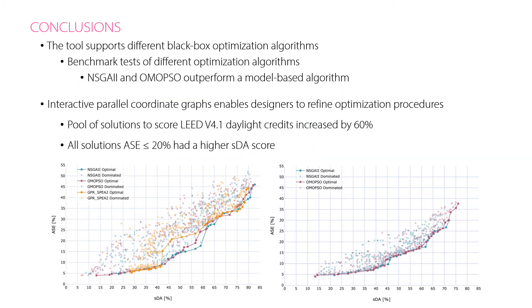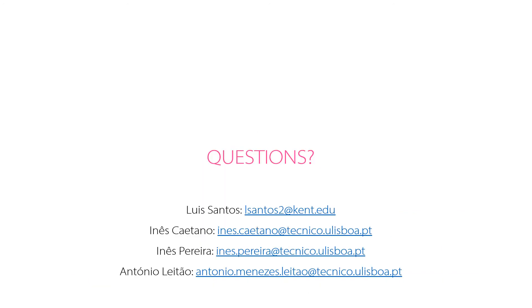In conclusion, our tool supports different optimization algorithms allowing architects to perform benchmark tests in order to find the most suitable search procedure to solve a given problem. In our experiment, the genetic algorithm NSGA2 and the particle swarm optimizer HOMOPSUM outperformed a model-based algorithm, thus challenging some recent published findings in building performance optimization. The interactive parallel coordinate visualization is an essential tool to further refine the optimization process, allowing us to improve the search for designs that better balance the conflicting objectives of annual sun exposure and spatial daylight autonomy. Thank you very much for your attention. We are open to questions.